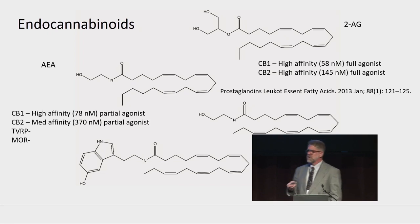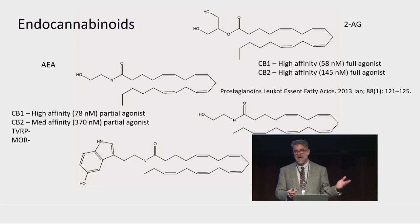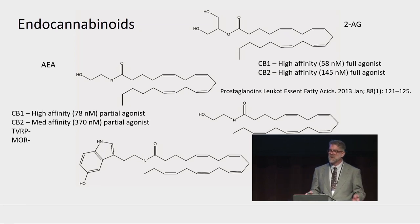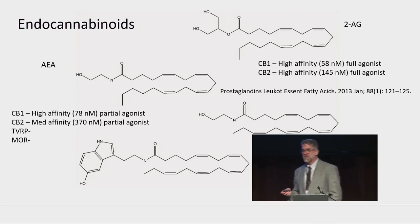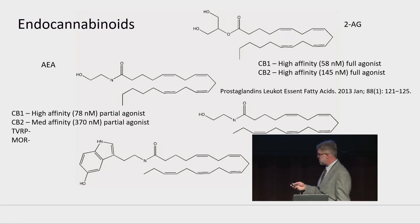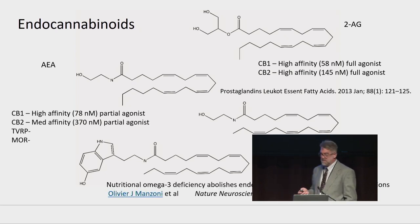When I talk about the endocannabinoid system, you'll hear me refer to what's known as endocannabinoid tone. Our endocannabinoid tone is largely built upon our intake of essential fatty acids and our ability to convert those fatty acids into the molecules we refer to as endocannabinoids. If we are efficient at producing endocannabinoids from our essential fatty acids, we would have a positive endocannabinoid tone. If we're inefficient, we would say we have a negative endocannabinoid tone. The balance of omega-3s and omega-6s is so important in this.